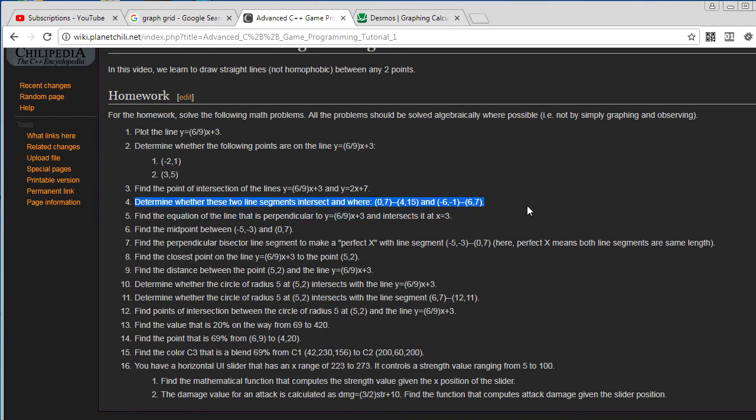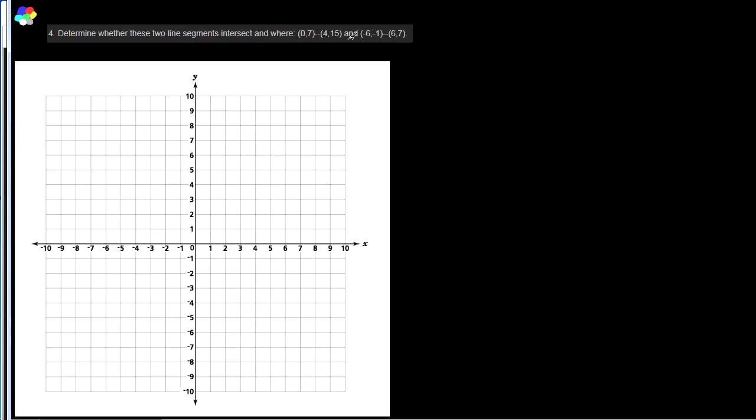Next question. Determine whether these two line segments intersect and where. Alright. So, obviously it would be very easy to solve this problem just by graphing. So, I mean we could do 0, 7 and 4, 15. Wow. I mean I can't really graph that very easily can I? Yeah. It's not going to be easy for me to graph here. So, screw that. But, I mean yeah, you could graph it and then look and you'd be able to see whether they intersect. But I mean if you're using, if you're writing a computer program you can't really do that, can you? A computer can't take out a piece of graph paper and, you know pull out its ruler and draw some lines. So, we gotta do it the math way.